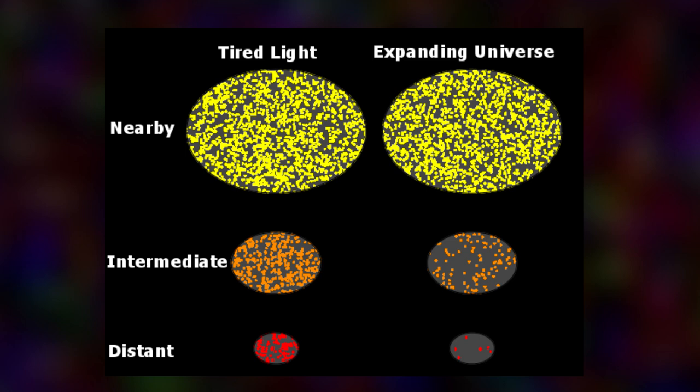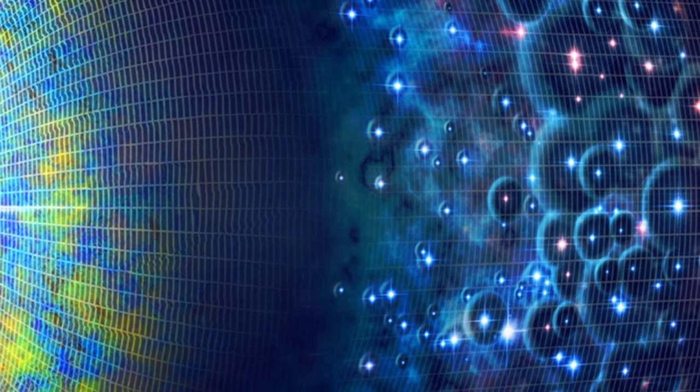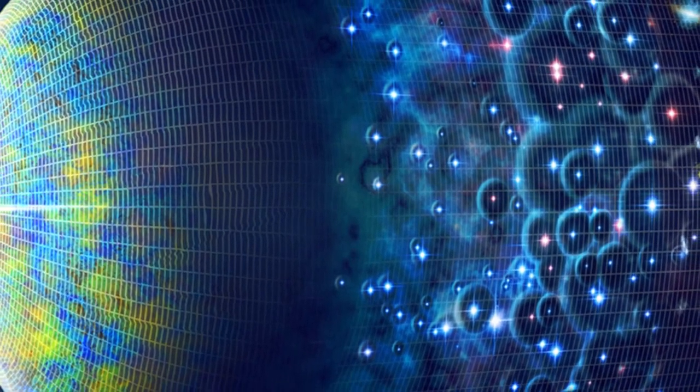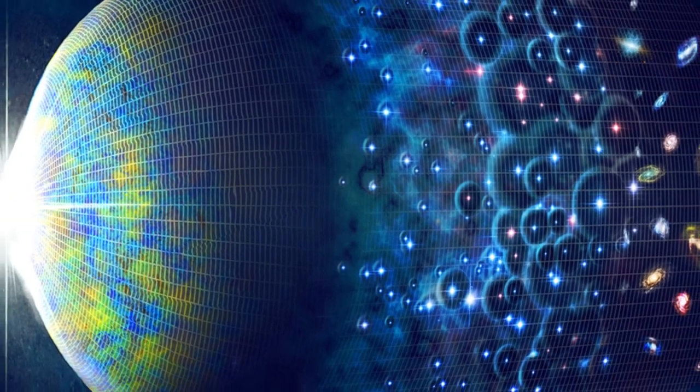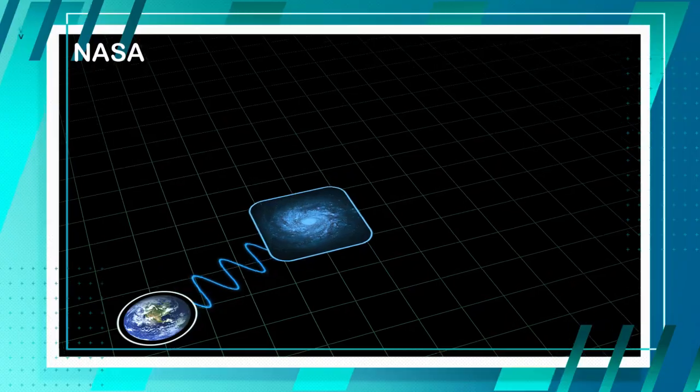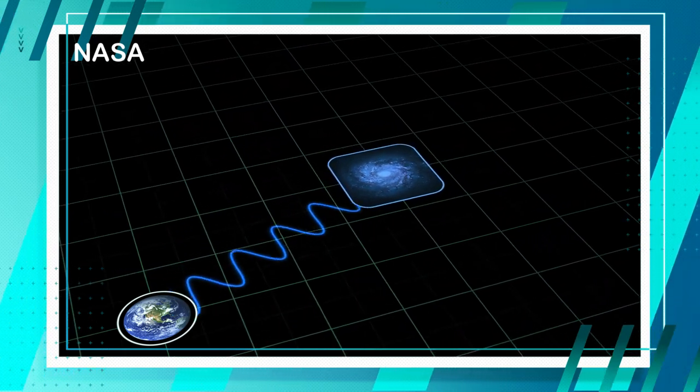Initially, this theory contradicted our observations of the universe. However, as Gupta suggests, if we allow this theory to coexist with the concept of an expanding universe, we can reinterpret the red shift as an amalgamation of both these phenomena.